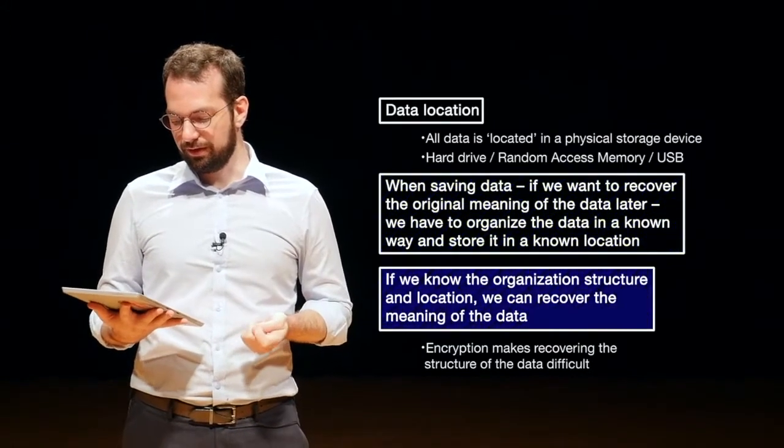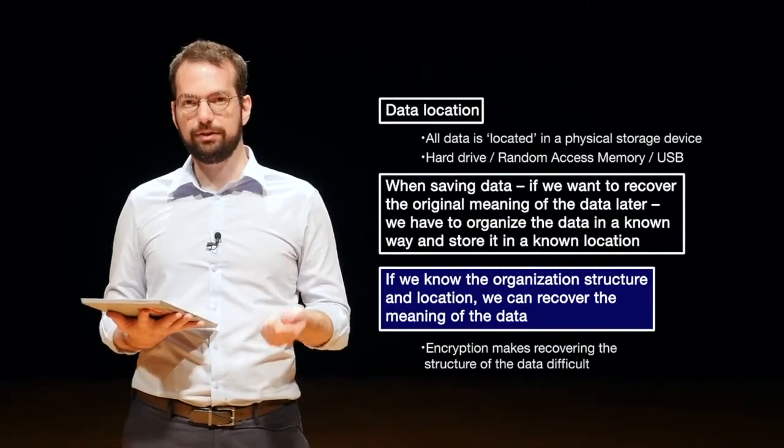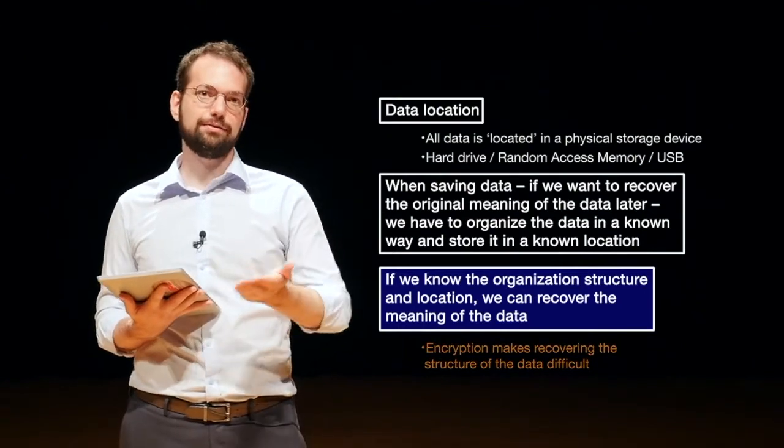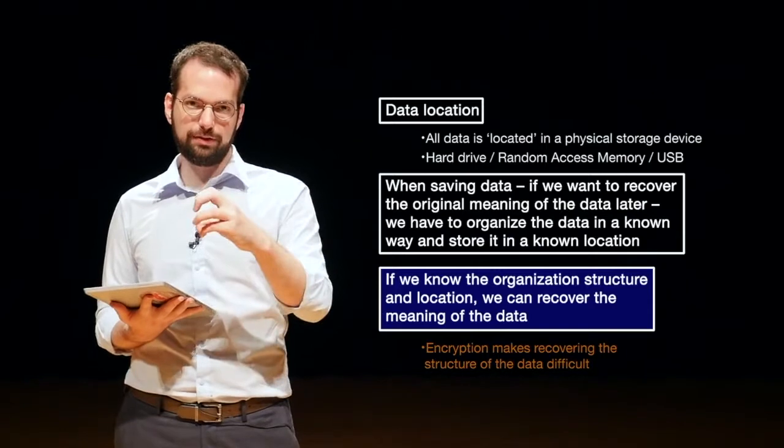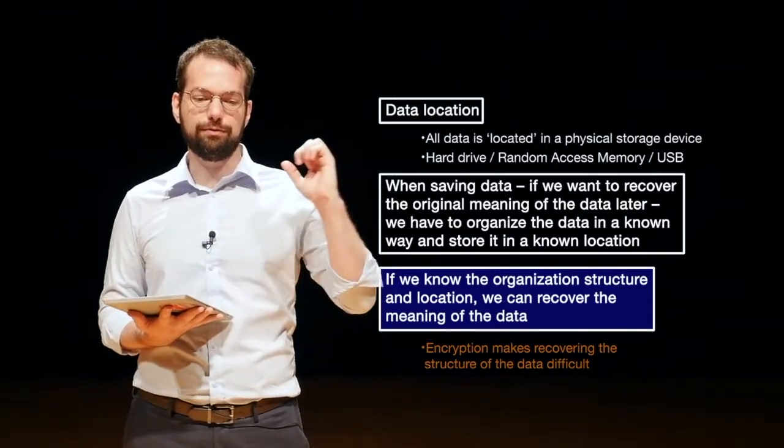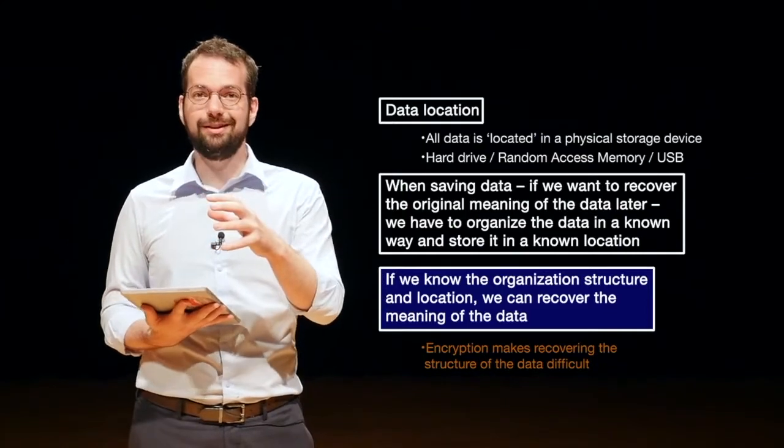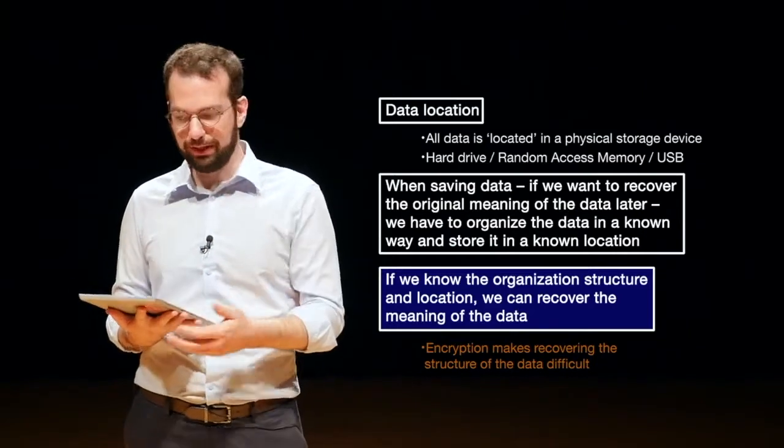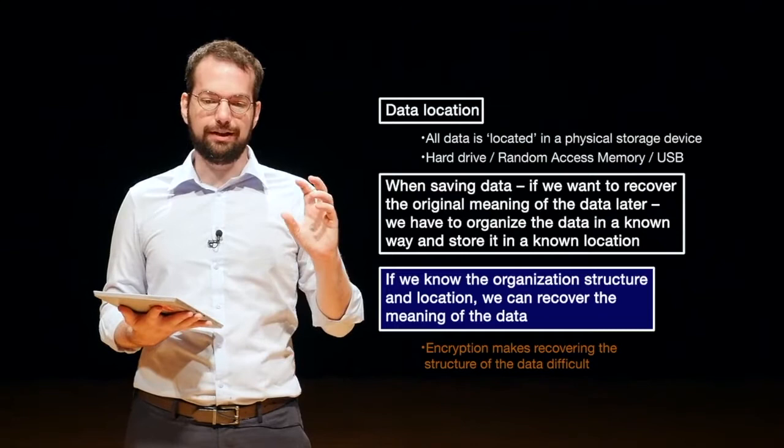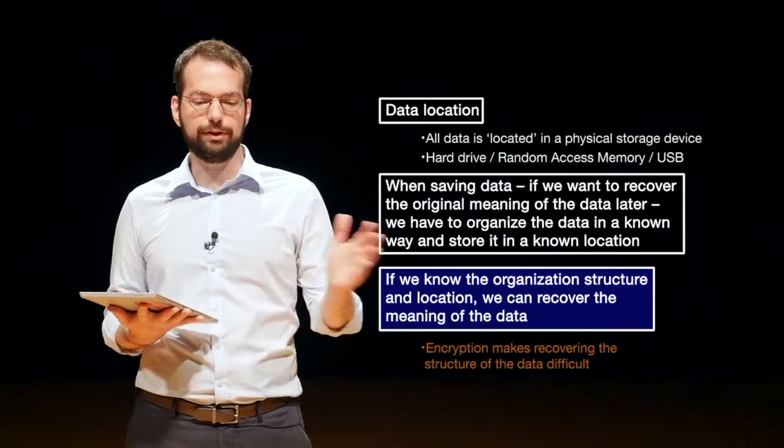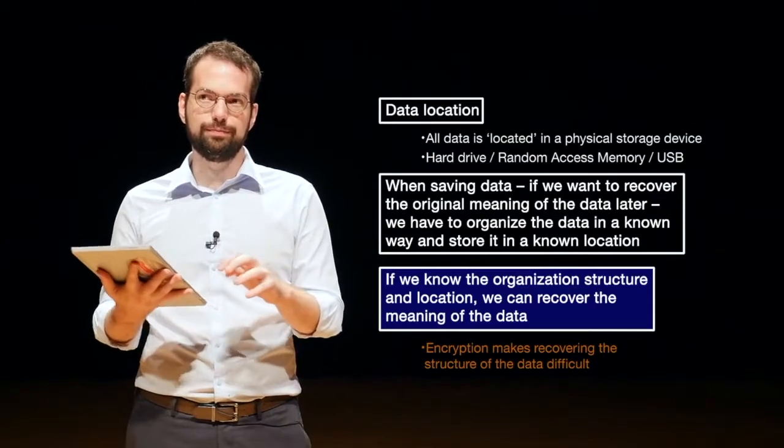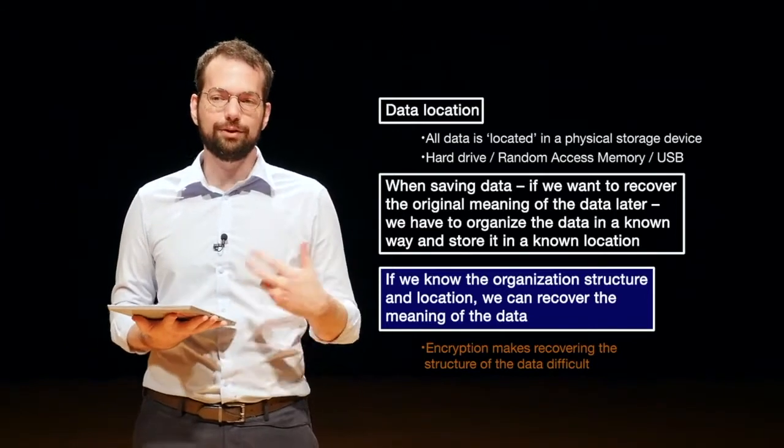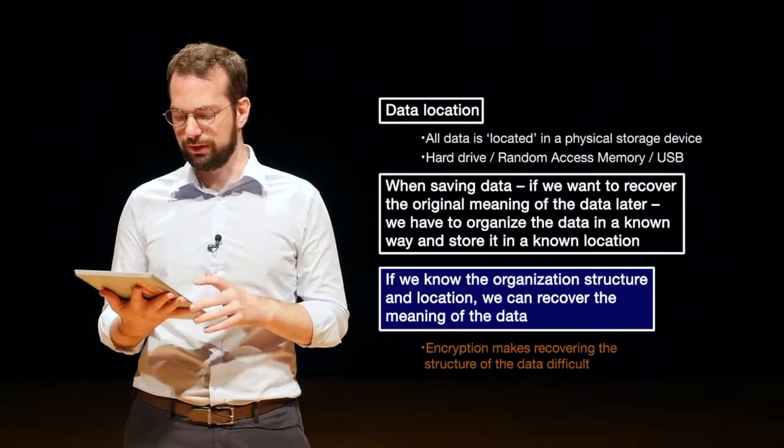So we need at least the organization of the data and the location to be able to try to make some sense of that. If we know the organization's structure and the location, we can recover the original meaning of the data. And that's what investigators are trying to do. Remember, we're trying to go from this binary level, these ones and zeros, to information that's relevant to our case. And of course, encryption makes this difficult because even if we know the location, it changes the organization of the data so we can't actually get any meaning out of it.